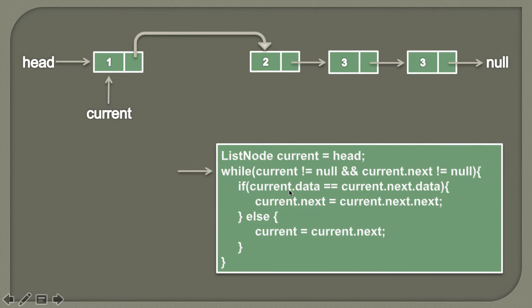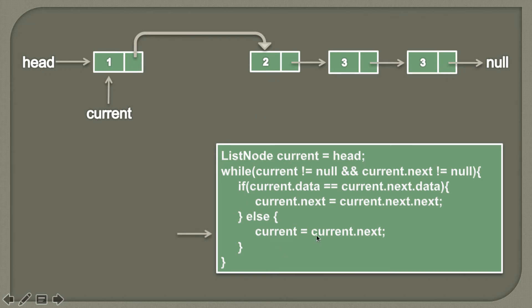Now again the while loop condition is evaluated. Current is not null and current.next is also not null, so the while loop executes. We check whether current data equals current.next data — current data is 1 and current.next data is 2, so they are not equal. The if block condition is false and the else block executes, meaning both nodes are different and not duplicates, so we simply traverse current to its next node.